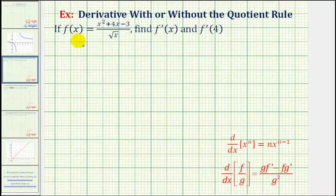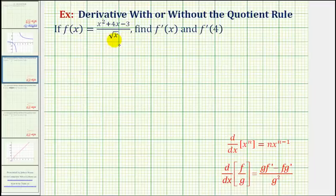Welcome back. Hopefully you just watched the video where we found the derivative of the given function without using the quotient rule. Since our denominator is a single term, we were able to divide each term in the numerator by x to the one-half, simplify, and then apply the basic power rule instead of the quotient rule. But in this video, I want to show how if we do apply the quotient rule, while it is going to be more work, we will obtain the same derivative function.